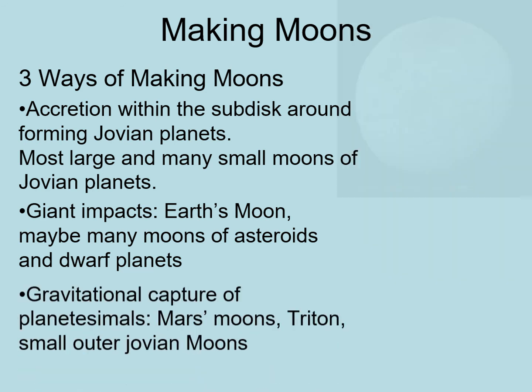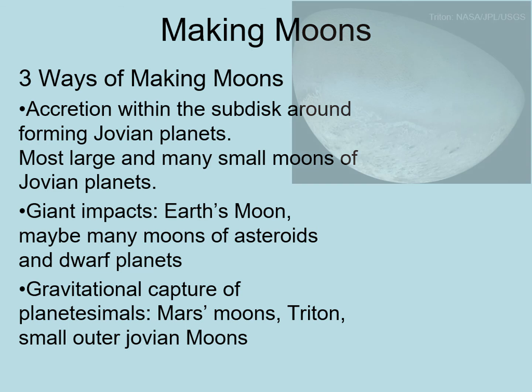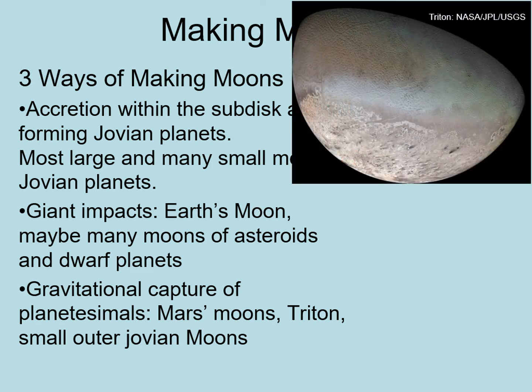There's one last way to get a moon: gravitational capture of a planetesimal. Anytime a planetesimal gets too close to a planet, there's a risk that it might be captured by that planet's gravity. This is much more likely if the planetesimal collides with something, causing it to lose orbital energy while it's close to the planet. Likely candidates include the moons of Mars, and moons whose orbits are at odd angles or even completely backwards. Some of the small outer moons of the Jovian planets, and one large moon — Neptune's Triton — all have these sorts of backwards orbits that make them likely to be captured objects.